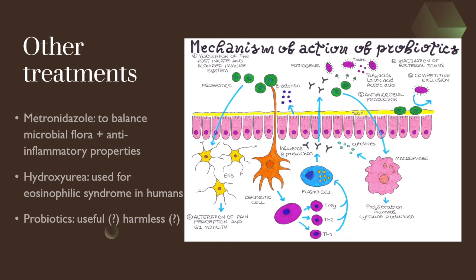Other treatments that have been suggested include the use of metronidazole to balance microbial flora and for its anti-inflammatory properties, hydroxyurea — which is used for eosinophilic syndrome in humans — and probiotics. It is not known if probiotics work in horses, and it is also not known if they are completely harmless. The mechanisms of action include modulation of the innate and acquired immune system, alteration of pain perception and gastrointestinal motility, production of substances with antimicrobial properties, inactivation of bacterial toxins, and elimination of pathogenic bacteria by competitive exclusion.